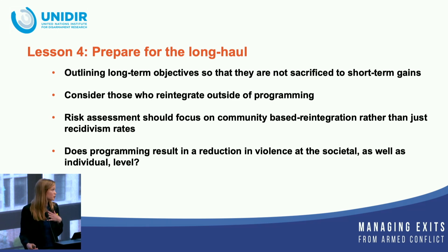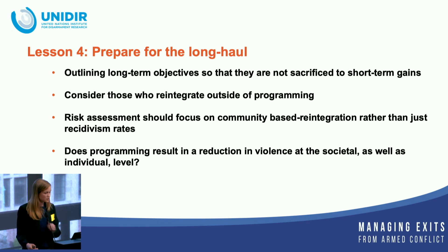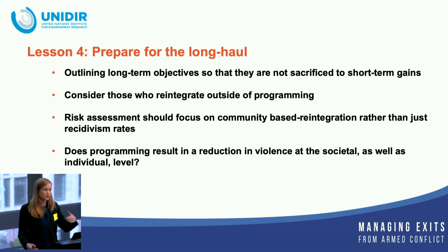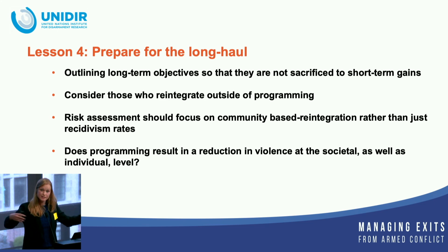In terms of determining programming effectiveness, we need to measure outcomes over time. Instead of just focusing on recidivism rates or how many people are successfully reintegrated, we should develop metrics like: do they have friends outside the group? Do they have a job where they interact with individuals outside the group? What the literature suggests is that over time, ties established outside the group serve as protective factors and reduce the risk of re-engagement with an armed group. We can't say they never will reengage, but over time they're less likely to.